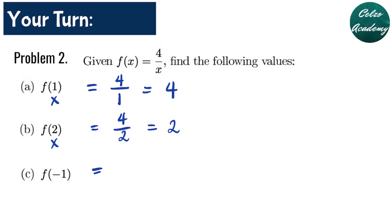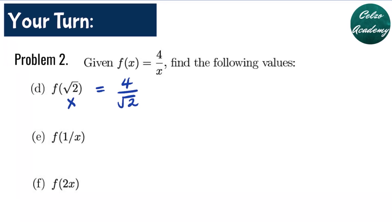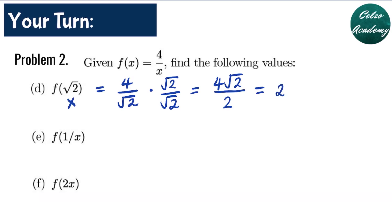For letter C, f of negative 1 — our x value is negative 1. So we have 4 divided by negative 1, and that is equal to negative 4. For question letter D, f of square root of 2 — our x value is root 2, so that is 4 divided by root 2. To rationalize this expression, we multiply both numerator and denominator by root 2. So we get 4 root 2 divided by root 4, which equals 2. Dividing 4 by 2 gives 2, and copying the radicand gives us 2 root 2.